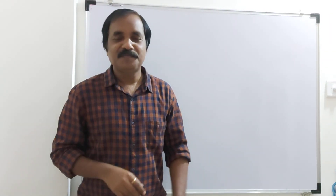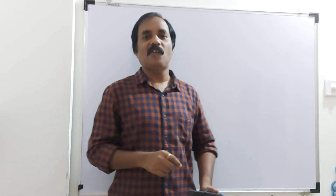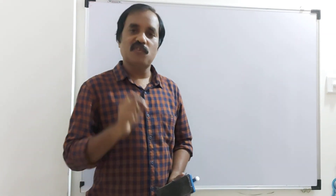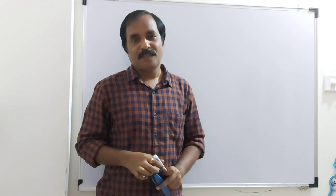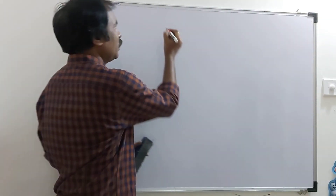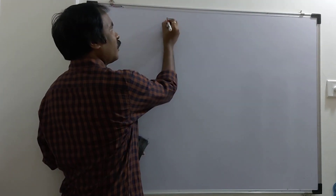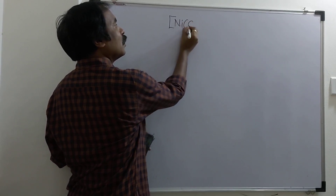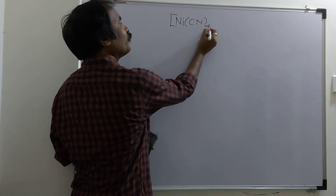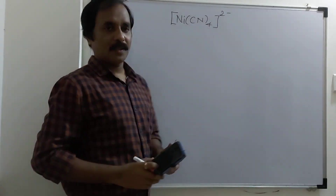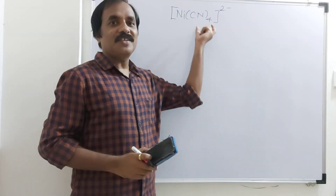Hello friends. In this segment of valence bond theory, today we will see the application of valence bond theory to square planar complex. Example of square planar complex: tetracyanonickelate(2-). This is an anionic complex.